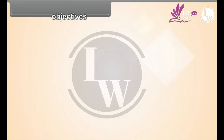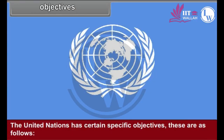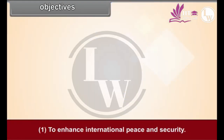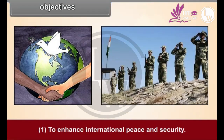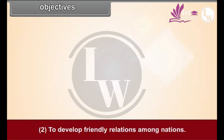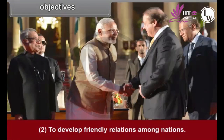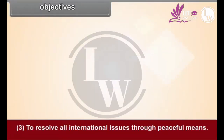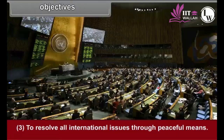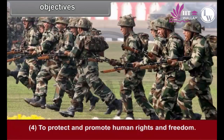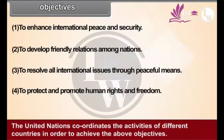The United Nations has certain specific objectives: 1. To enhance international peace and security. 2. To develop friendly relations among nations. 3. To resolve all international issues through peaceful means. 4. To protect and promote human rights and freedom. The United Nations coordinates the activities of different countries in order to achieve the above objectives.